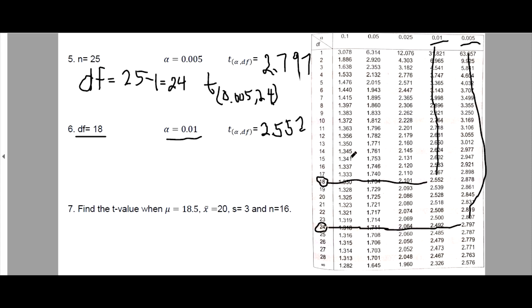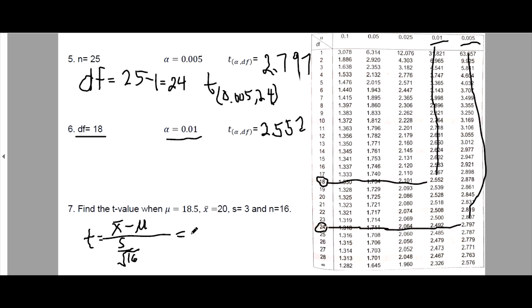Example 7: Find the T-value using the formula T equals the sample mean minus population mean, divided by the sample standard deviation divided by the square root of n. Substituting: 20 minus 18.5, divided by 3 divided by the square root of 16. The answer is 2, or written as 2.000.